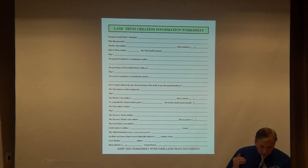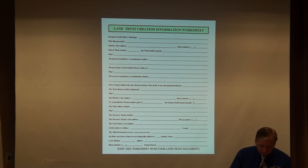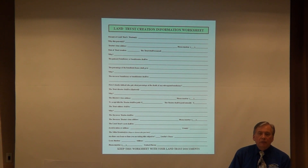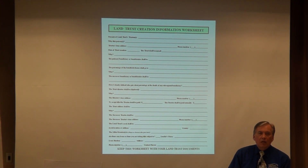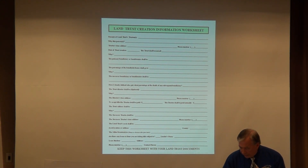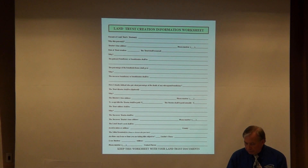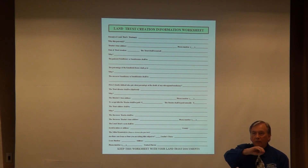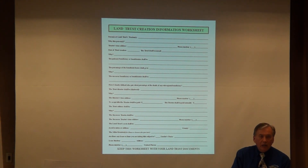Now we've got our primary trustee, our primary beneficiary, and our successor beneficiary set up. Be sure to clearly define who gets what at the beneficiary's death. If you need to get your trust, go ahead and get it now, because they're going to be packing up soon.